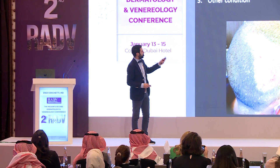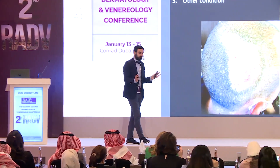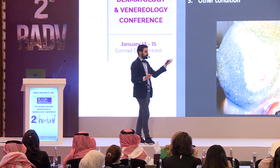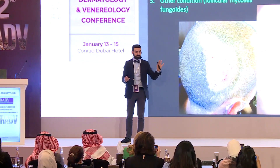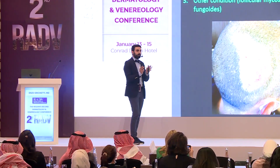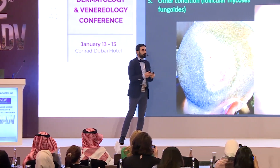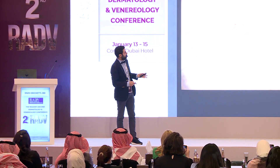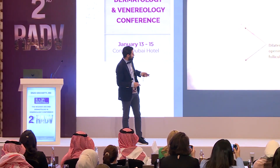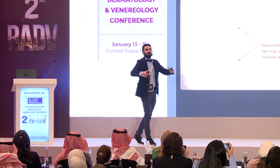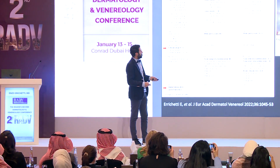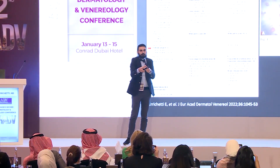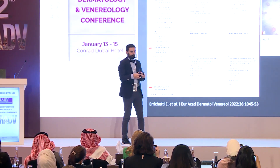Another case: discoid lupus, lichen simplex chronicus, or other condition? We still have follicular plugs and we do not see dotted vessels, so one might think about discoid lupus. But actually this is follicular mycosis fungoides — the third disorder that may show follicular plugs. In this condition we also have dilated follicular ostia — dilated follicular openings. In follicular mycosis fungoides, follicular openings are dilated because the lymphomatous infiltrate destroys the follicle, causing the follicular opening to dilate.